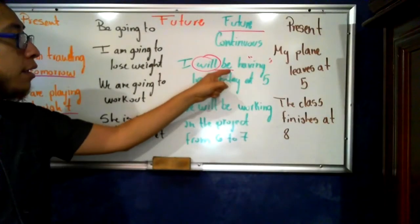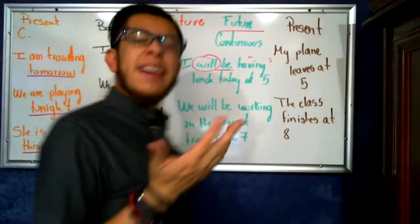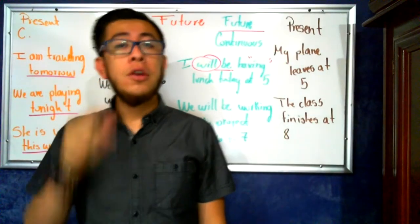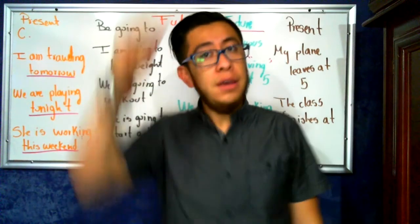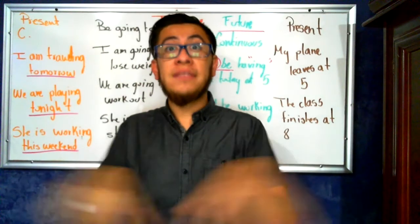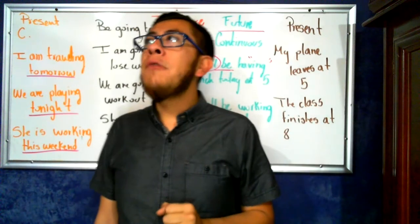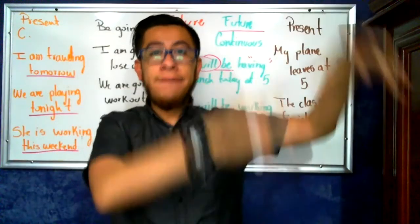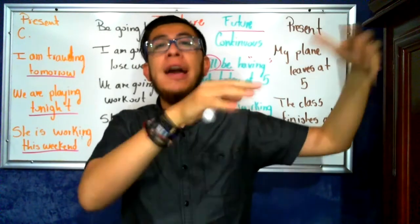So an example would be, I will be having lunch today at five. Okay, teacher. And what is this for? Simple. We have to locate that all continuous tenses set us in an exact moment in time. Present continuous in the present. As it says, for example, I am giving the class right now. So it's present right now. Now, past continuous, for example. I was watching a film yesterday at five o'clock. So I am set yesterday at five o'clock doing this activity that is watching a film.